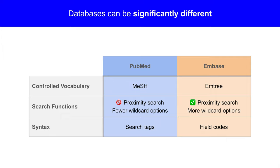Let's compare PubMed to Embase. PubMed's controlled vocabulary is MeSH, while Embase uses mTree terms. With search functions, PubMed does not allow proximity searches and has fewer options for wildcard searching. On the other hand, Embase has more options available. Finally, there's a different syntax — PubMed search tags do not work in Embase. Instead, Embase uses field codes for search terms.